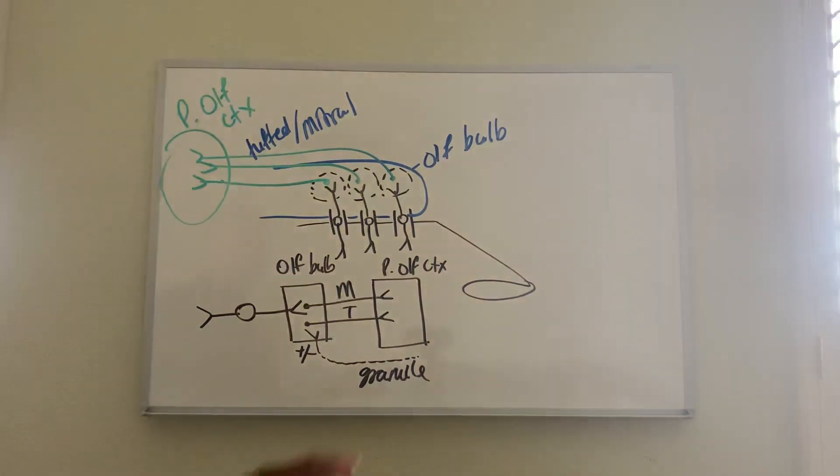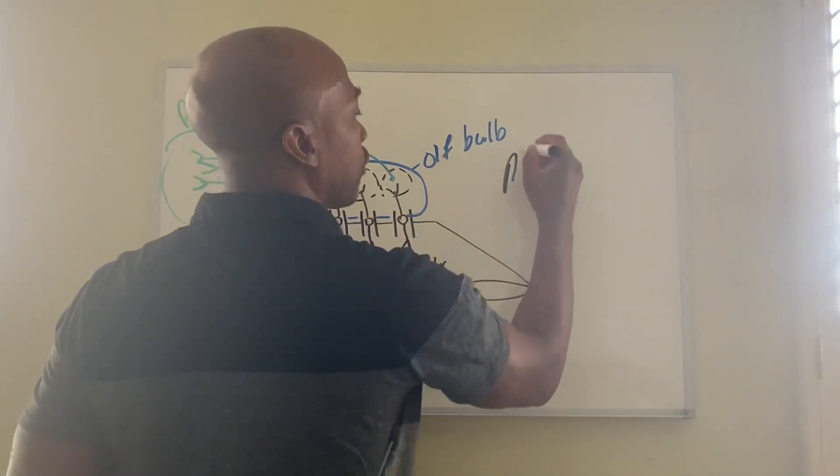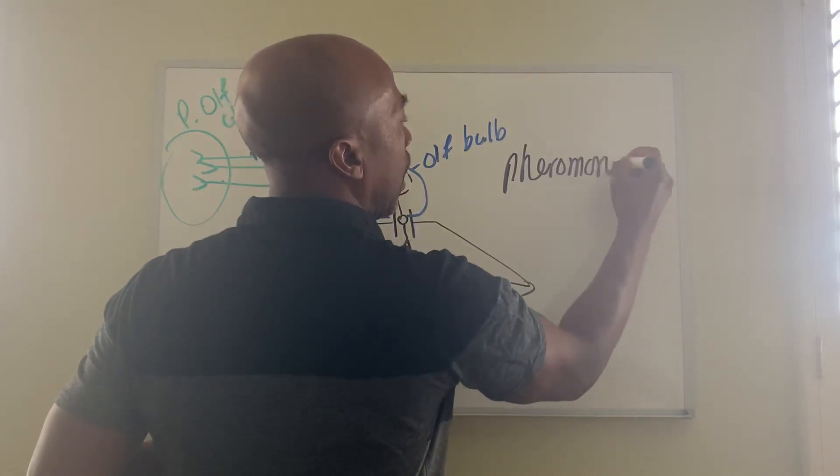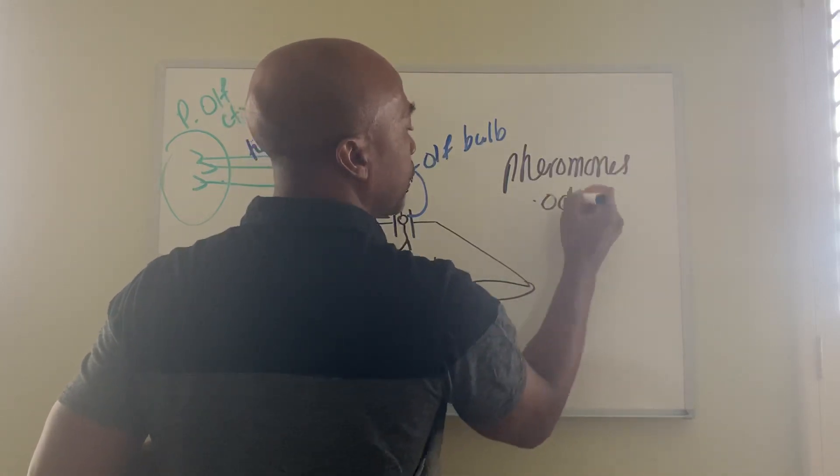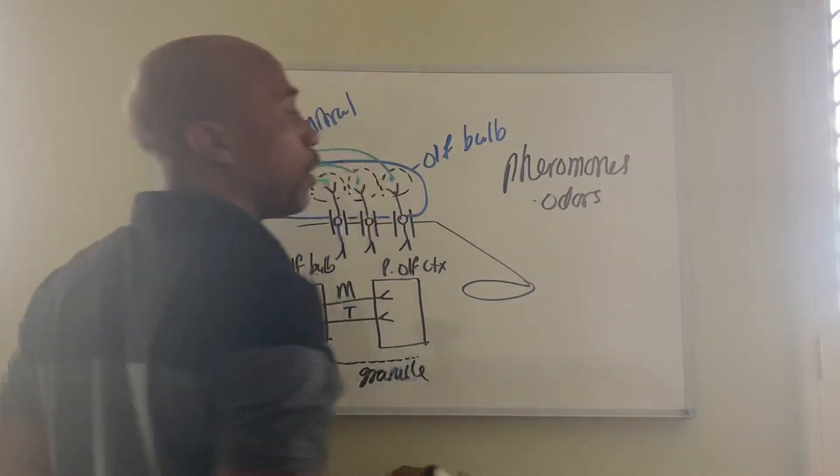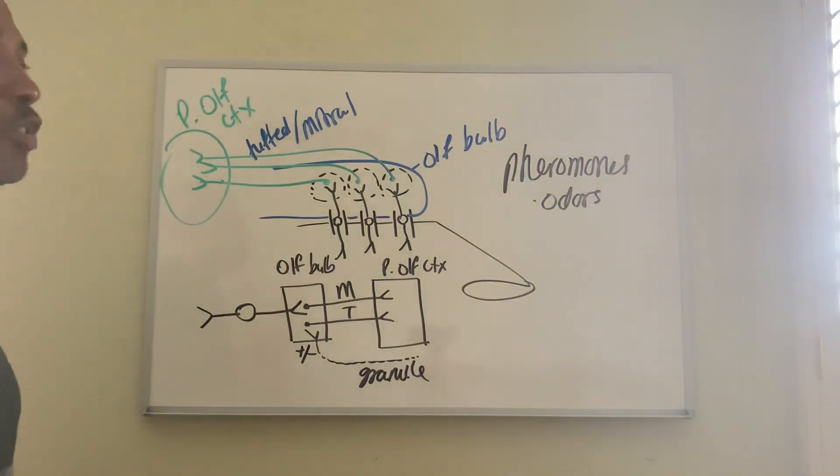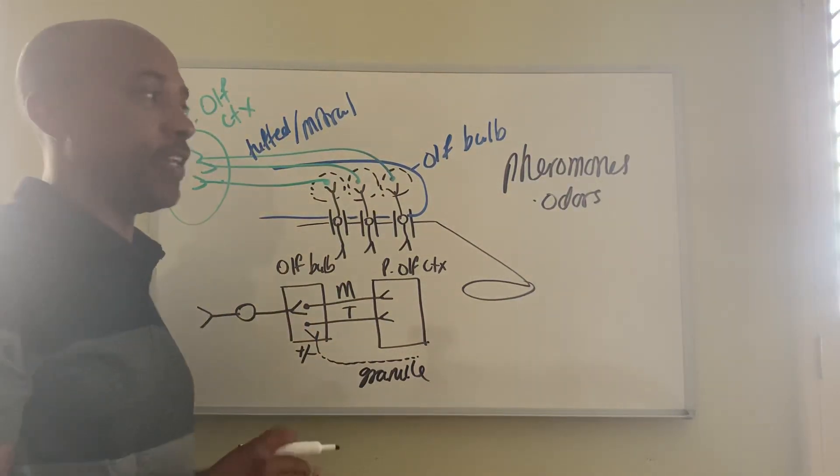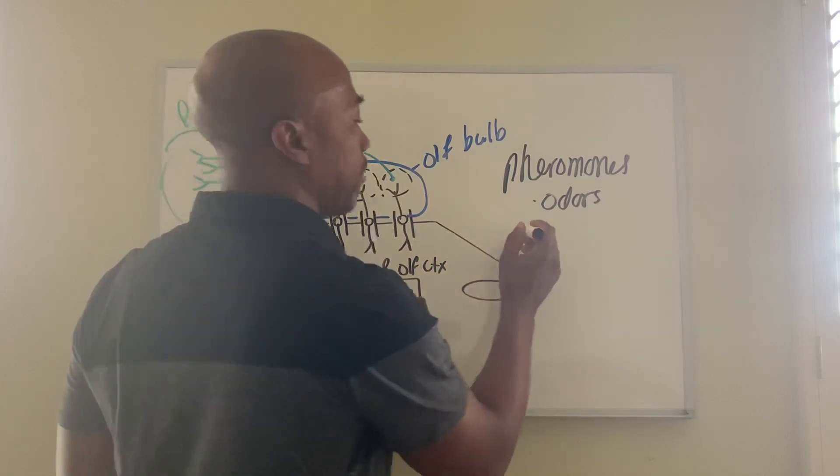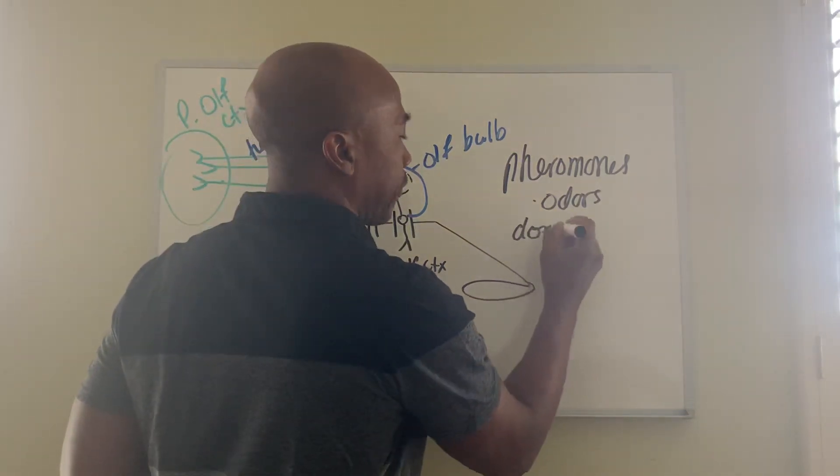Also one more thing on olfaction: something called pheromones. Pheromones are odors released by both genders that tend to affect the reproductive activity of the other. For example, you know, it's called the dormitory effect.